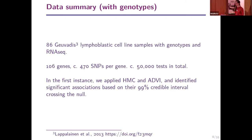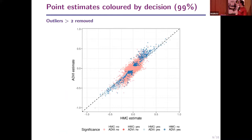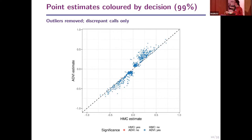We tried applying Hamiltonian Monte Carlo and ADVI to identify significant associations based on whether the 99% credible interval crossed null. Looking at the results, there was a diagonal trend but estimates from ADVI were very noisy. Comparing Hamiltonian Monte Carlo estimates on the x-axis with variational inference estimates on the y-axis, there were very few associations that HMC called significant but ADVI missed. We identified that this approach might not be accurate overall, but could be useful as a screening approach.